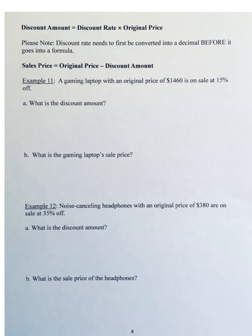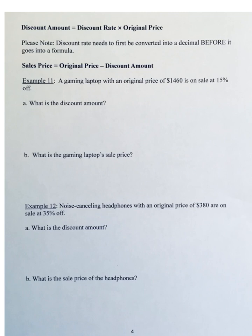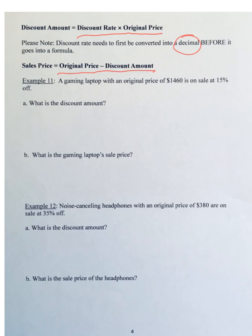Now let's look at discount amount and what it does to the sales price. The discount rate must first be converted to a decimal, then multiplied by the original price — since 'of' means multiply. Once you know the discount amount, the sale price is the original price minus the discount amount.